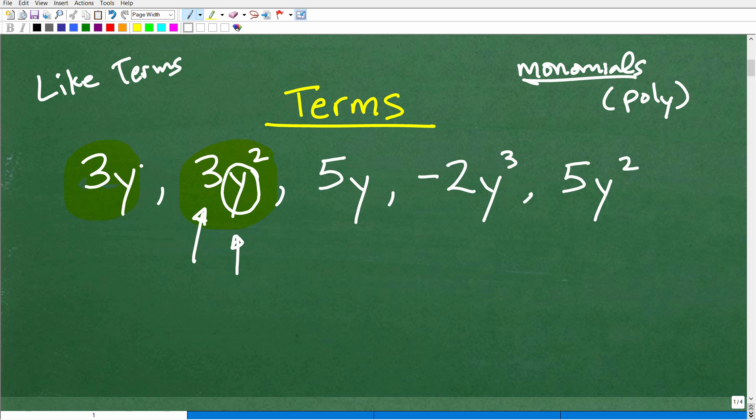So this is a variable. It could be y, it could be x, it could be anything. So don't get stuck on, oh, it has to be a y or a z. No, it could be any variable. So again, we're talking about what makes up a term in algebra.